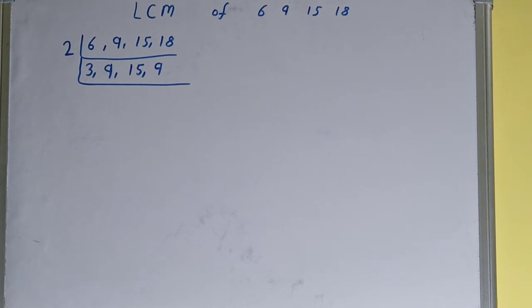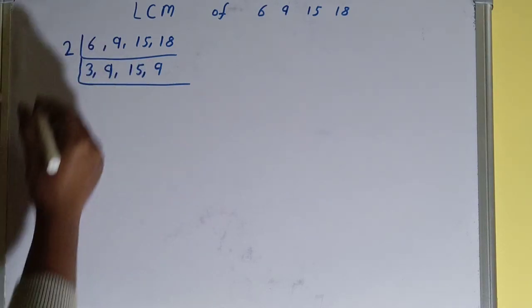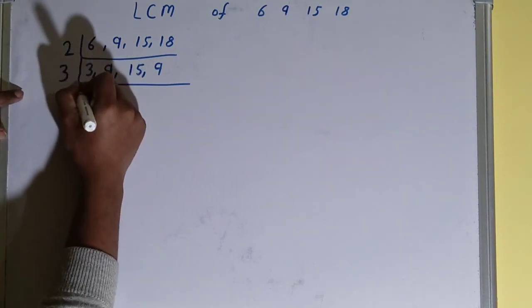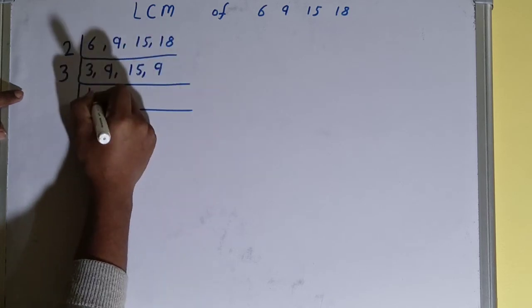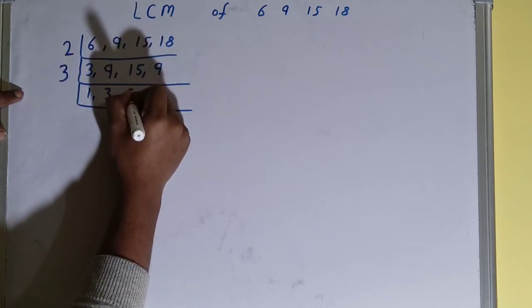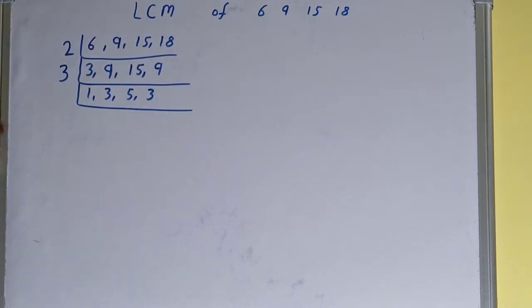That is 3. Is any of the numbers divisible by 3? All the numbers are divisible, so we'll divide and we'll be having 1, 3, 5, 3. Again, if we check, is any of the numbers divisible by 3?